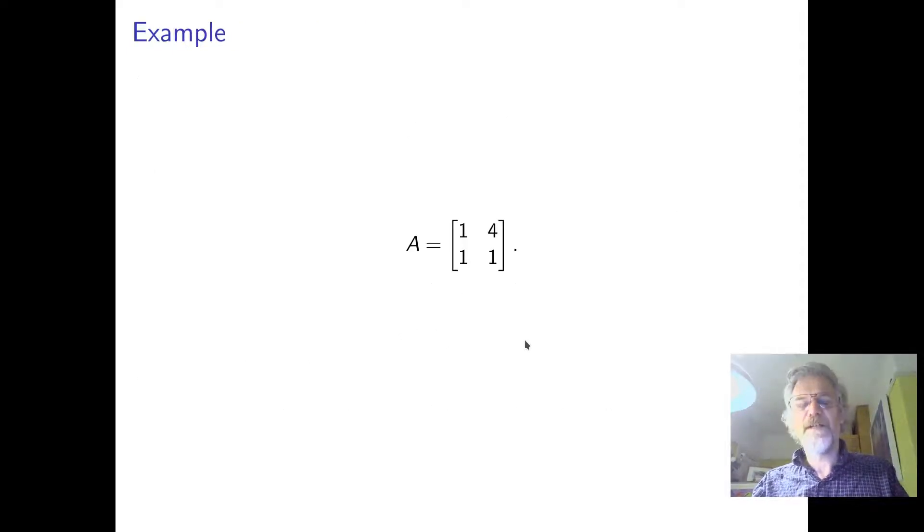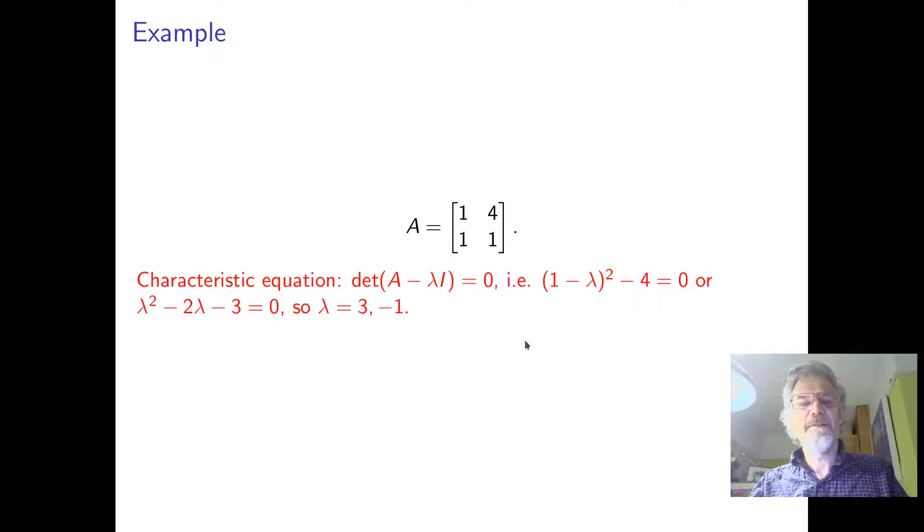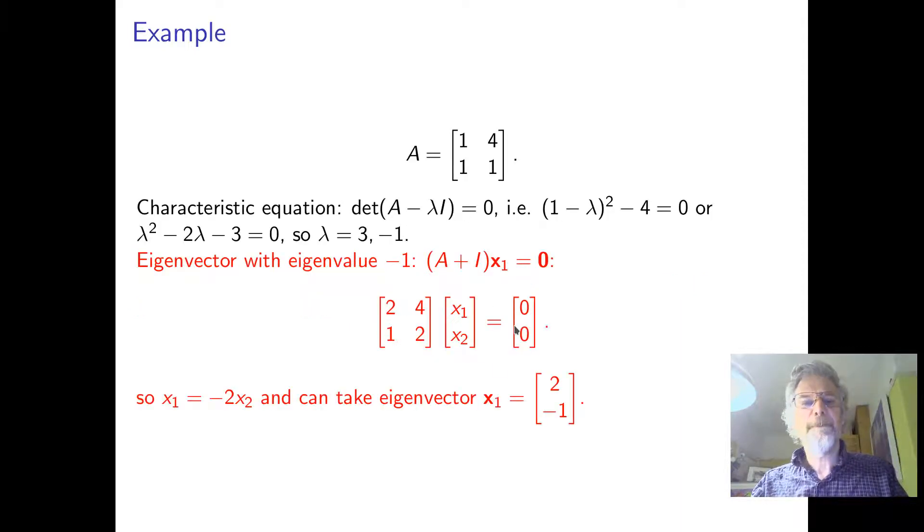So here's a matrix, the procedure is we get the characteristic equation det(A minus lambda I), we solve the characteristic equation to find the roots here, three and minus one. They're two, they're different so that's okay, we have to find the eigenvectors.